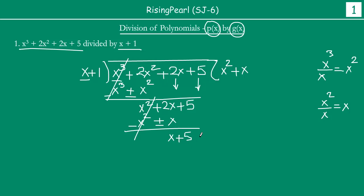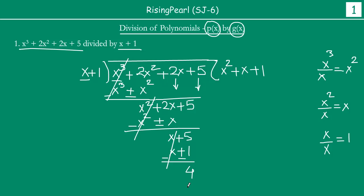Our next dividend term is x + 5. We take the first term x, divide it by the first term of the divisor x, and we get 1. So we write plus 1. Now, at this point, friends, can we divide further? The answer is no. Because this new dividend term has degree 0 — it is a constant polynomial — while our divisor has degree 1. When the degree of the dividend is less than the degree of the divisor, the division process stops.